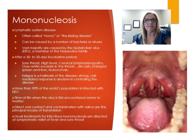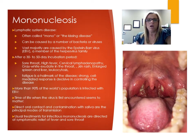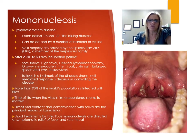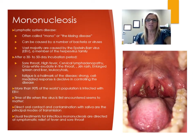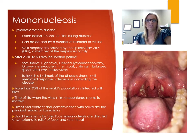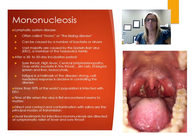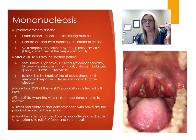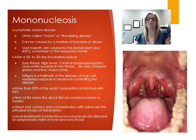Mononucleosis, or 'mono' — the kissing disease — is a lymphatic system disease. Symptoms include sore throat, fever, cervical lymphadenopathy, and enlarged spleen. It can be caused by various bacteria or viruses, but the largest portion are caused by the Epstein-Barr virus, a member of the herpesvirus family. The incubation period is 30 to 50 days, followed by sore throat, high fever, swollen lymph nodes, grayish-white exudate in the throat, skin rash, leukocytosis of infected B cells and then T cells, and long-term fatigue — the hallmark of the disease.